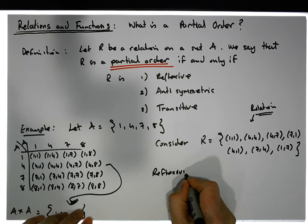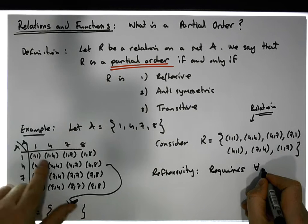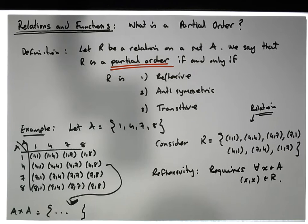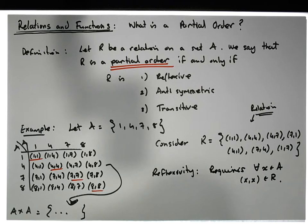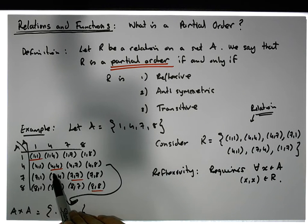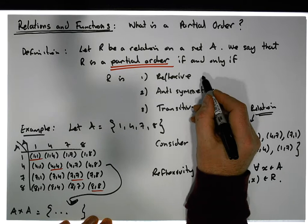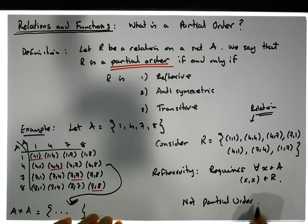Reflexivity requires that for each and every x in set A, the pair (x,x) must be an element of the relation. So we need all diagonal pairs present. Looking at this relation, although we have (1,1) and (4,4), we don't have (7,7) and we don't have (8,8) — they're missing. So this relation is not reflexive, and hence it is not a partial order.